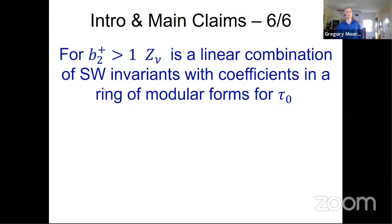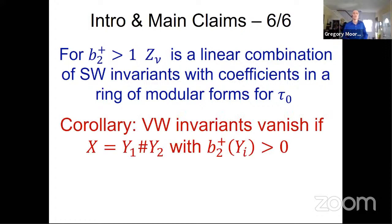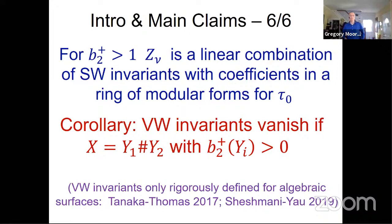Finally, if B2+ is bigger than 1, then this function is a linear combination of Seiberg-Witten invariants with coefficients in the ring of modular forms for tau naught. A corollary is that if X is a connected sum of two 4-manifolds with positive B2+, then the Seiberg-Witten invariants vanish, the Donaldson invariants vanish, and the same is true of the Vafa-Witten invariants. Mathematicians might say that Vafa-Witten invariants are only rigorously defined for algebraic surfaces — that's recent work of Tanaka-Thomas and Sheshmani-Yau — but I would say that the formulas I'm about to show should point the way to a rigorous mathematical definition of Vafa-Witten invariants more generally.